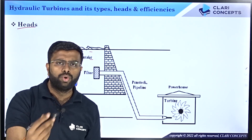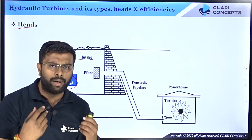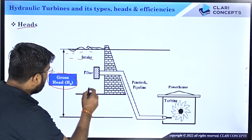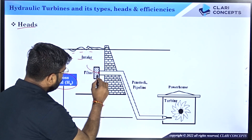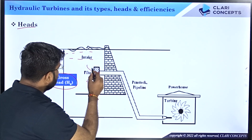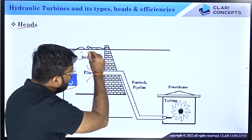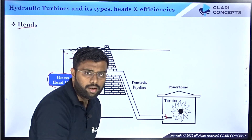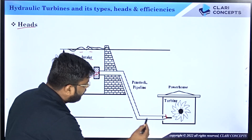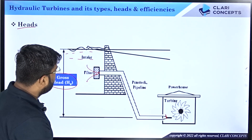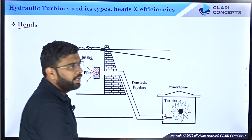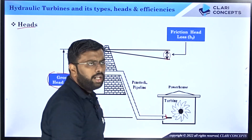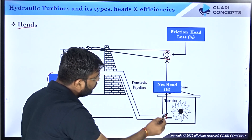As flow goes through the pipe there are many losses: entry loss, exit loss, bend loss, friction — all these losses result in an energy drop. So as water travels through the penstock to the turbine inlet, the total available head is reduced. The difference between the total available head and the head at turbine inlet we call energy loss, specifically friction head loss HF. The remaining amount we call the net head.